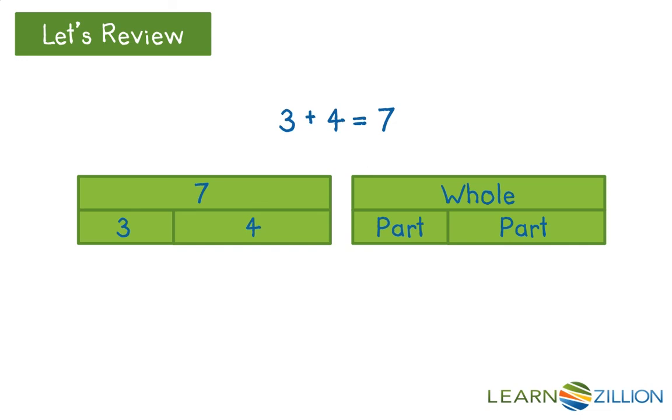By looking at the bar model, we can see how the equation can be written in different ways. We could write 3 plus 4 equals 7 as 4 plus 3 equals 7, 7 minus 3 equals 4, and 7 minus 4 equals 3. These equations are all equal to each other.